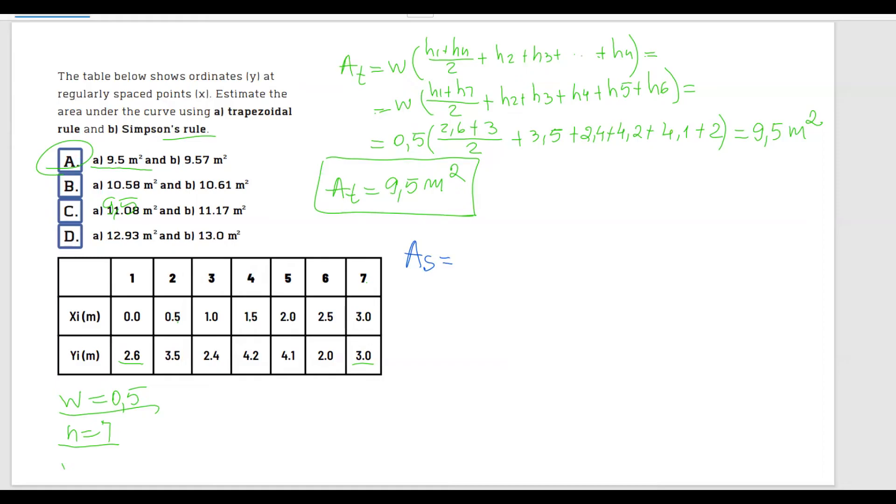And the Simpson's rule tells me that the area is equal to w over 3 times h1 plus 2 times the sum of hk, and k is all of the odd numbers 3, 5, so on, and n minus 2, all the way up to n minus 2.